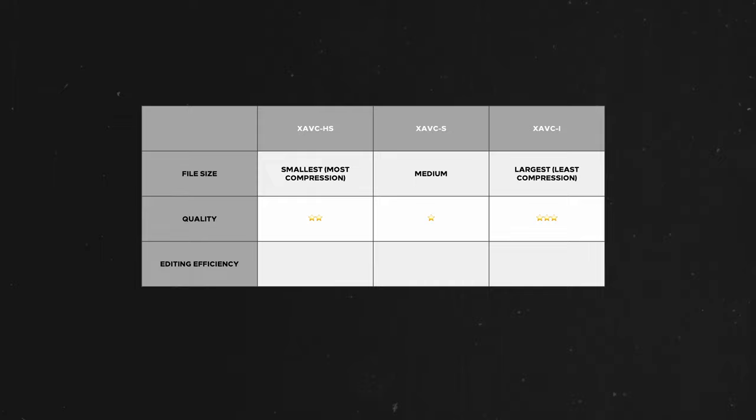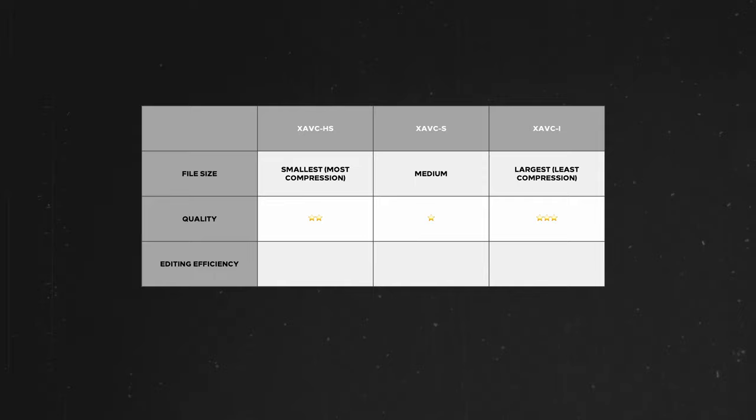Next in the middle is XAVC-S, and you'd think going down in order of file sizes that this would be the next best image quality. But surprisingly, XAVC-HS comes in front of it — even though it compresses a lot more, the image quality from the most compressed XAVC-HS codec actually produces the second best image quality available on your camera. Which means XAVC-S comes in last in image quality. So XAVC-S has the second most storage usage and the worst quality — so why would you ever choose it?